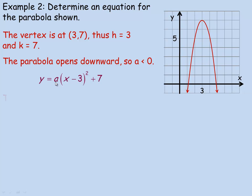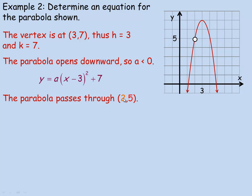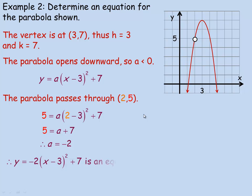To find a algebraically, find a point the parabola passes through — for example, (2, 5) or (4, 5). We'll substitute 2 in place of x and 5 in place of y and solve for a. So: 5 equals a times (2 minus 3) squared plus 7. Now 2 minus 3 is negative 1; squared is 1, so this is just 1 times a. So 5 equals a plus 7. Solving for a: subtract 7 from both sides, and 5 minus 7 is negative 2 — just as the graph suggested. So a is negative 2, and substituting that in gives us the equation y equals negative 2 times (x minus 3) squared plus 7.